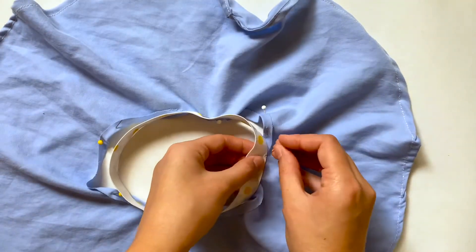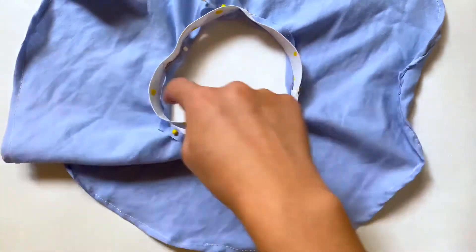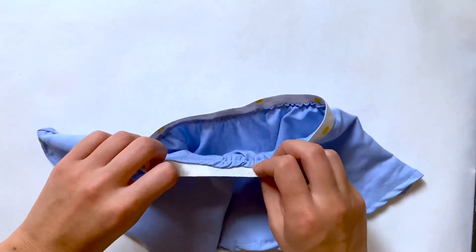The waistband is actually going to be a little smaller than the circumference of that inner circle, so you can just stretch it a little bit as you're sewing. And after that, you are finished!